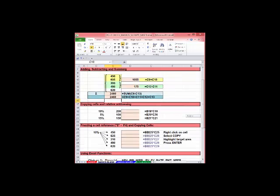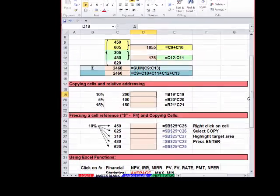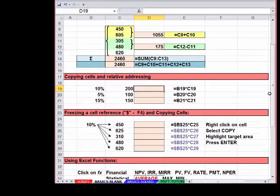Let's look at copying cells and relative addressing. Excel makes it very easy to enter a formula in a cell and then copy it to other cells. When you copy a formula, Excel changes the cell references relative to where the formula is placed. Let's look at this example. I want to multiply the percentages in column B times the numbers in column C and place the results in column D.